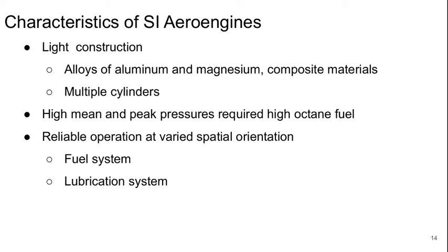Some general characteristics of spark ignition aero engines are that they are typically constructed to be very light, made of aluminum or magnesium alloys and sometimes partially with composite materials. They typically have a relatively large number of cylinders to help with safety in terms of redundancy, and they typically have high mean and peak pressures, therefore requiring high octane fuels that don't auto-ignite easily.